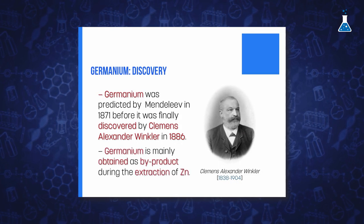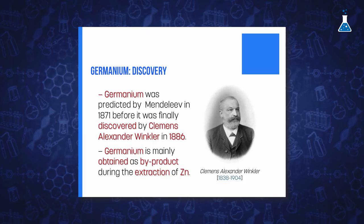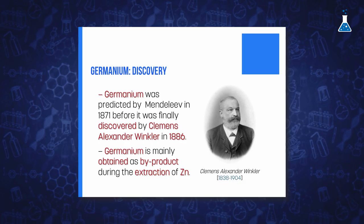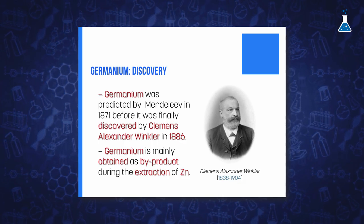Germanium, which is mainly obtained as a by-product during the extraction of zinc, is frequently also required in high purity, and therefore zone melting techniques are also employed.